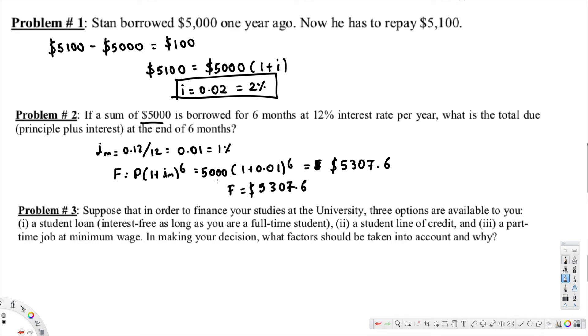Now let's look at the next problem. Problem number three says: suppose that in order to finance your studies at university, three options are available to you: (i) a student loan interest-free as long as you are a full-time student, (ii) a student line of credit, and (iii) a part-time job at minimum wage. In making your decision, what factors should be taken into account and why?